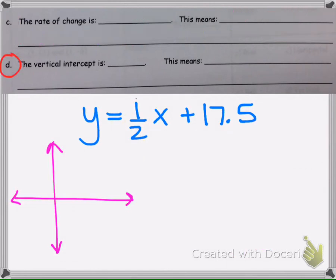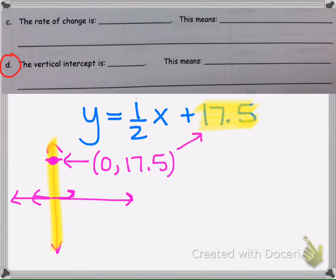Okay, so now we're asked to find the vertical intercept. If we think of a graph, this is the vertical intercept right here, and that's exactly what this number here tells us, where it's going to cross that vertical axis. In other words, it would cross, let's just say, right there. That's 17.5 there. That ordered pair right there is, you don't go left, you don't go right, you just go straight up. So the x is 0, and the y is 17.5. That's how we write that as an ordered pair.